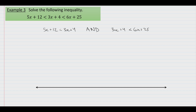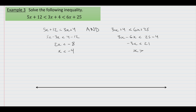Solving these individually: on the left, we put x on the left side of the inequality and get 5x minus 3x is less than 4 minus 12, that is 2x is less than negative 8, so x is less than negative 4 after dividing by 2. On the other side, 3x minus 6x is less than 25 minus 4, giving us negative 3x is less than 21. Dividing through by negative 3 — and switching the inequality — gives us x is greater than negative 7. We need both of these conditions to be met.